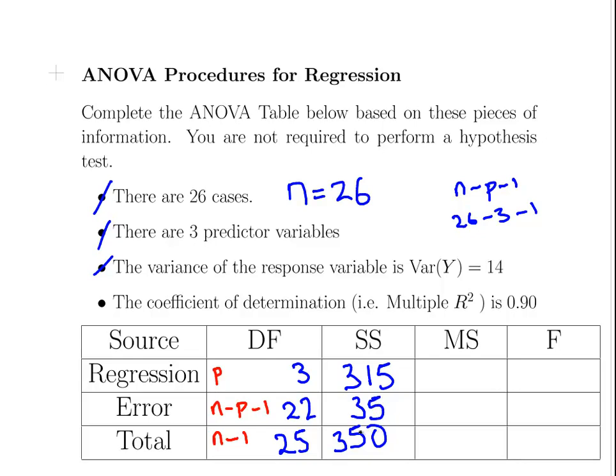Now we're going to calculate the mean squares. The mean squares, as always, are the sums of squares divided by degrees of freedom. This is 315 divided by 3, which is 105. The next one is 35 divided by 22.